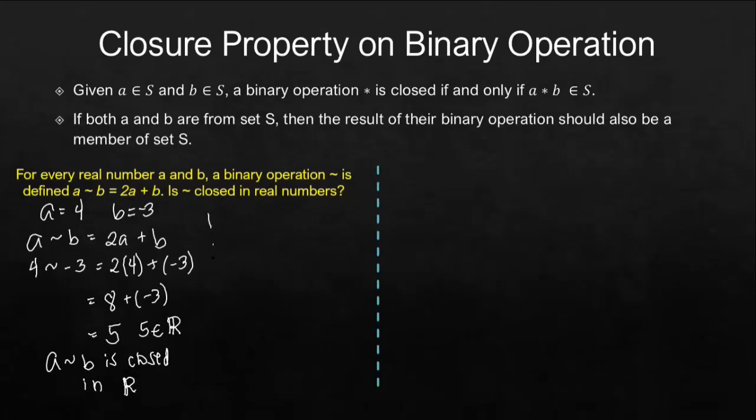So, let's give another example for the values of A and B. For A, let's use a fraction, say we have 1 third. And then for B, let's use square root of 5.